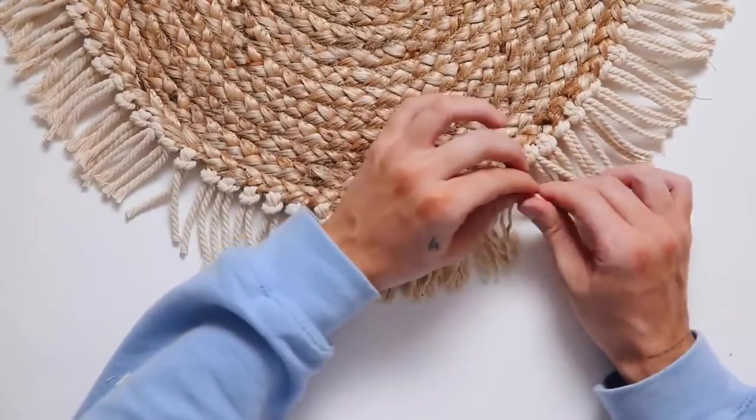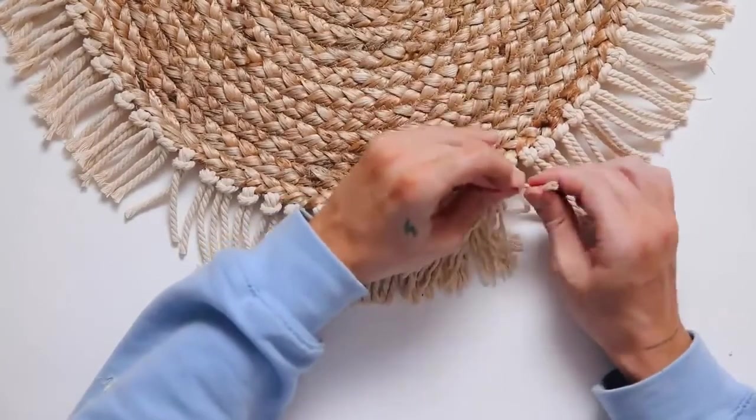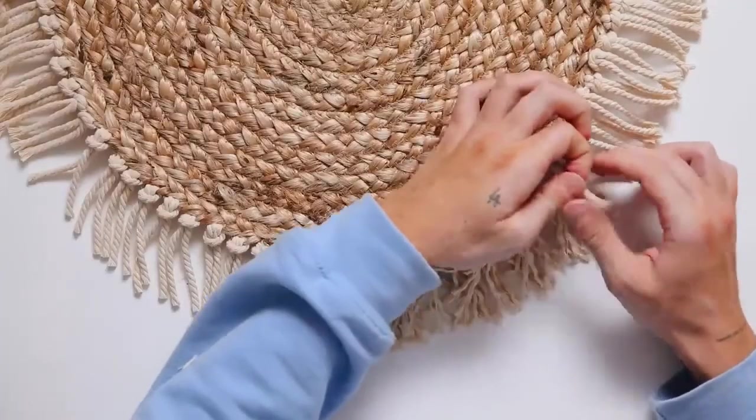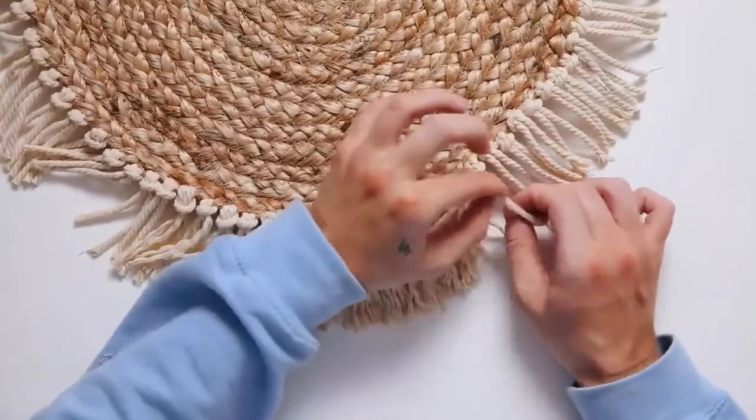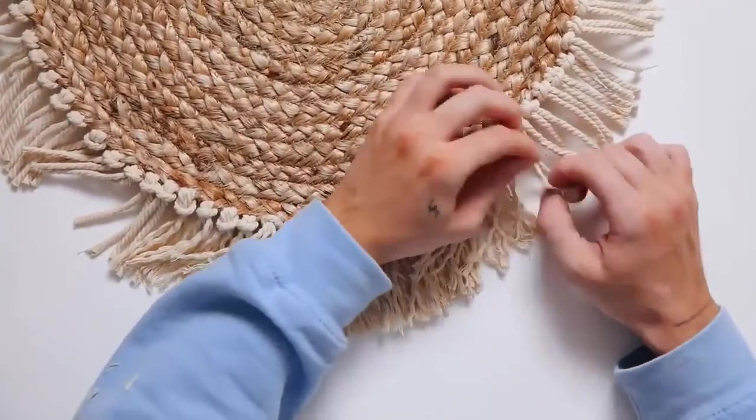Next, I'm unraveling each piece of rope - unraveling all three cords that make up the one macrame rope. I'm going to go all the way around and repeat this process once again.